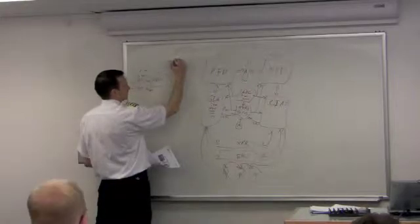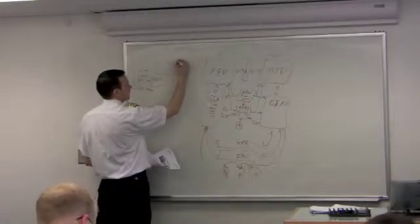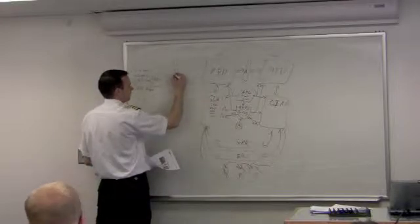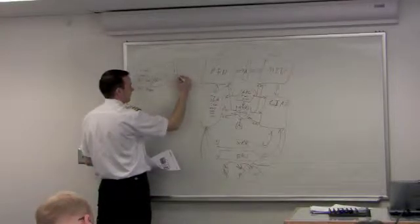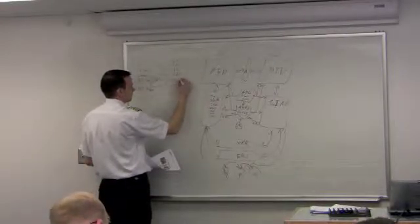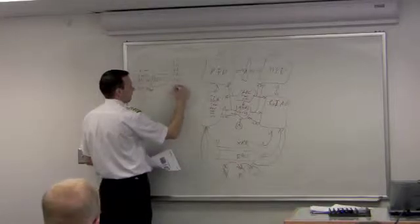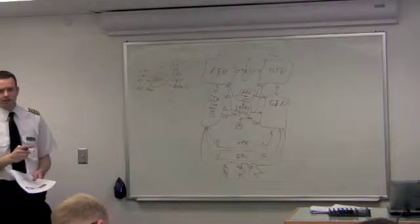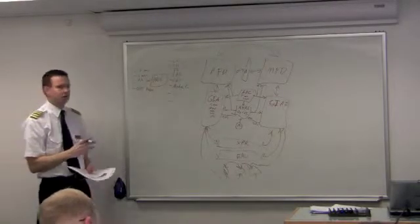I'm going to lose my indicated airspeed, my altitude, my vertical speed, my true airspeed, my outside air temperature, my mode C. The transponder gets the pressure altitude from the Air Data computer.